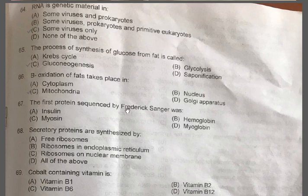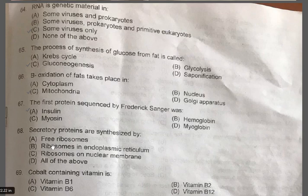Question 67: The first protein sequenced by Frederick Sanger was — A: Insulin, B: Hemoglobin, C: Myosin, D: Myoglobin. The correct one is A, Insulin. Question 68: Secretory proteins are synthesized by — A: Free ribosomes, B: Ribosomes in endoplasmic reticulum, C: Ribosomes on nuclear envelope, D: All of the above. The correct one is B, ribosomes in the endoplasmic reticulum.